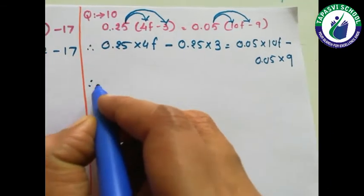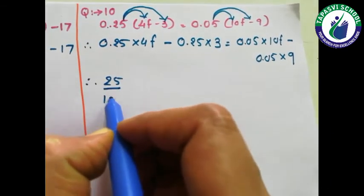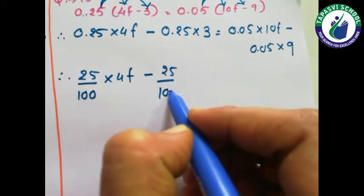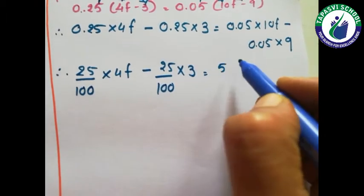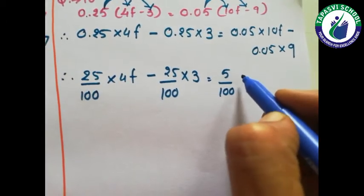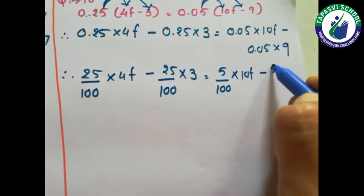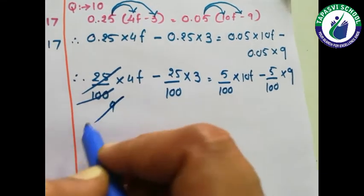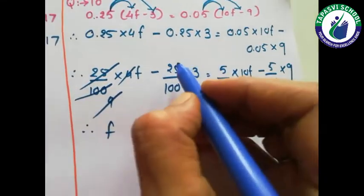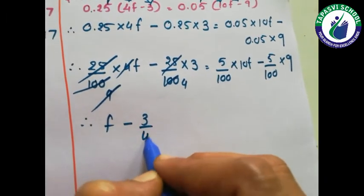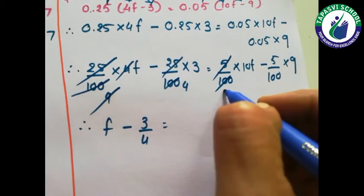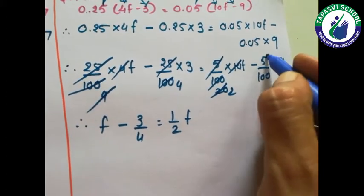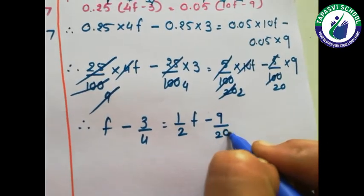Now these are in decimal, so I will convert them into fractions. After the decimal there are 2 points, so I will put 25 upon 100 into 4f, again 25 upon 100 into 3, here 5 upon 100 into 10f, and 5 upon 100 into 9. 25 over 100 into 4f — 4 cancels, so it becomes f. 25 over 100 into 3 becomes 3 upon 4. 5 over 100 into 10f — 10 cancels — becomes 1 upon 2 f. 5 over 100 into 9 becomes minus 9 upon 20.